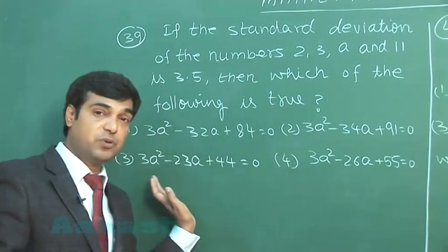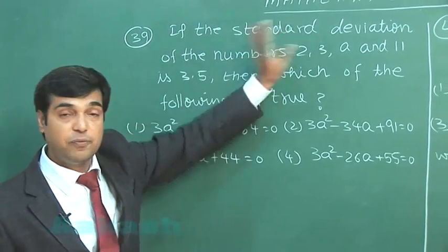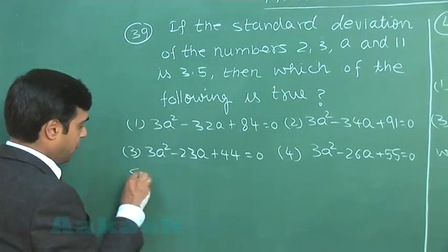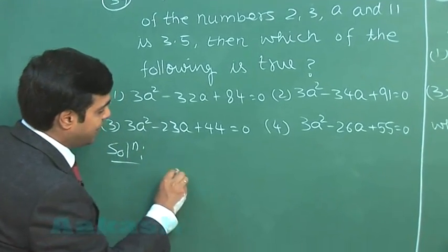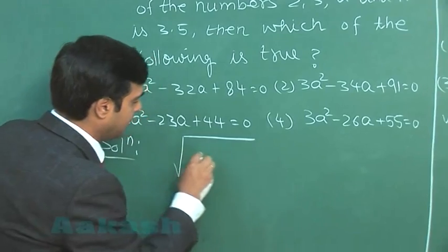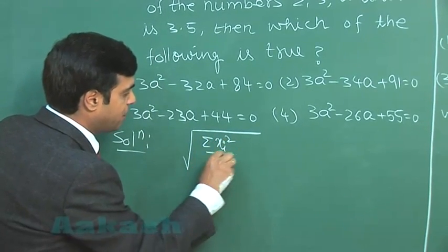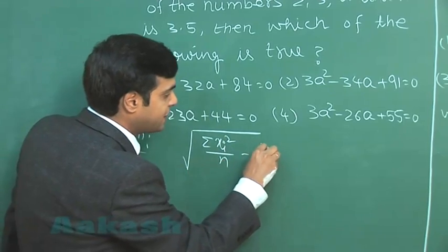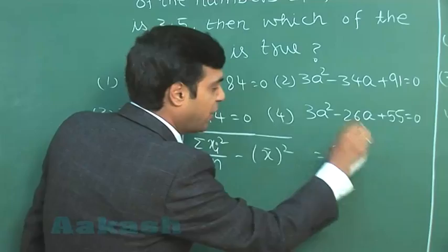One equation we have to find out in terms of A. Now, the standard deviation of the four numbers is given. We know that standard deviation is obtained as square root of summation x_i square by n minus x bar square. This is given to me as 3.5.